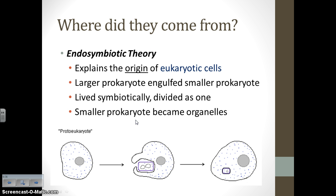How did we go from prokaryotic organisms to eukaryotic organisms? The endosymbiotic theory explains the origin of eukaryotic cells. Basically, a larger prokaryote at some point engulfed a smaller prokaryote. They started living together symbiotically, and eventually grew and divided as one organism. Those smaller prokaryotes became organelles like the chloroplast, the mitochondria, or even the nucleus. There's a lot of evidence supporting this theory because all of those structures have genetic material, which they would if they came from a living organism.